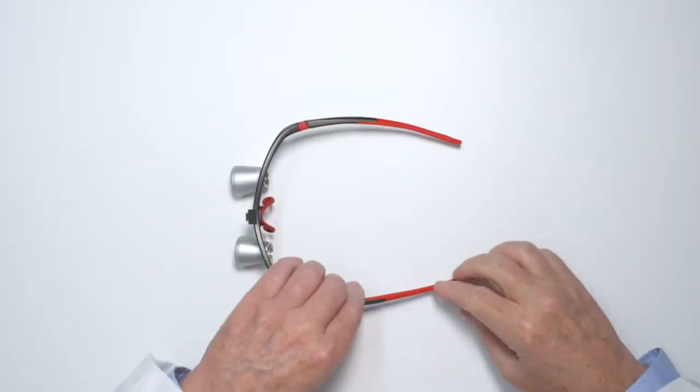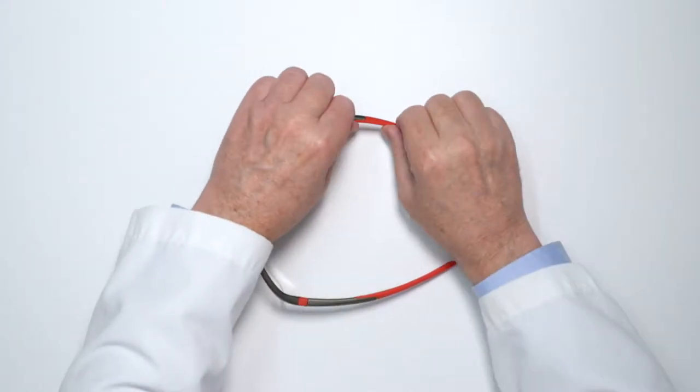Next, adjust the earpieces so that when you look down, the loops won't slide off. Using your fingers, bend the ends of the arms inward. Test the fit by tilting your head down.